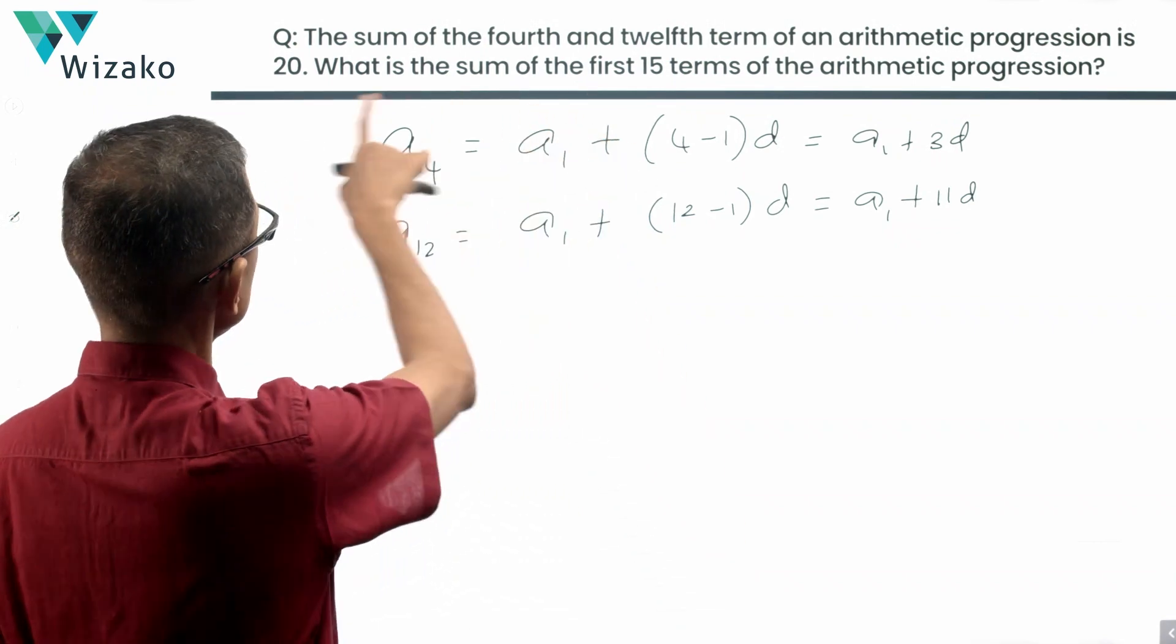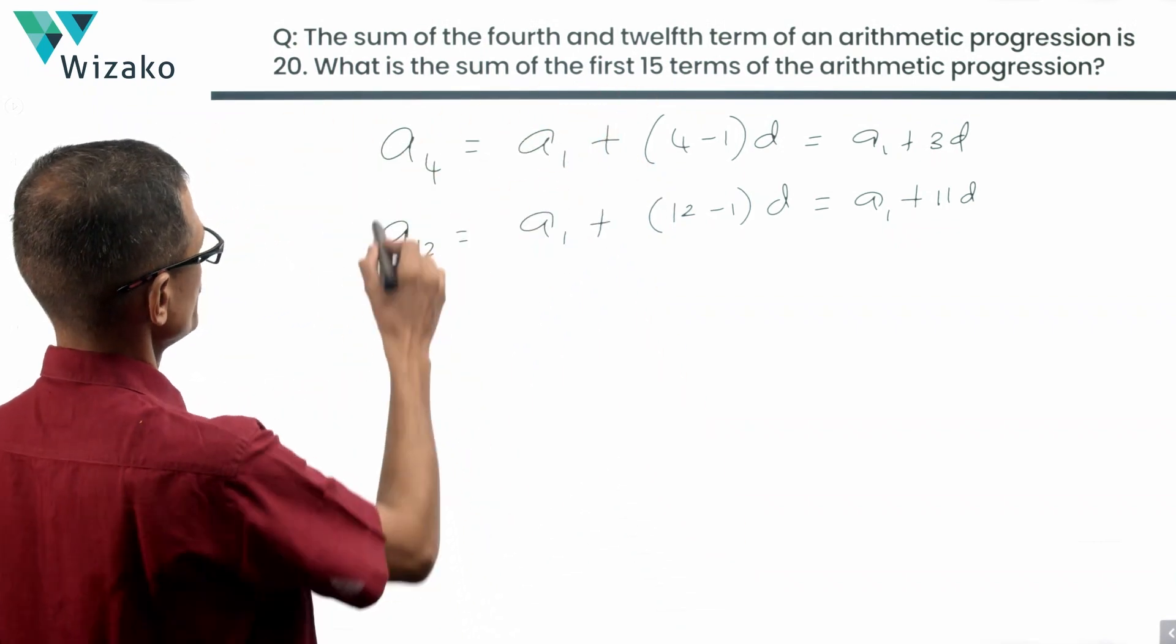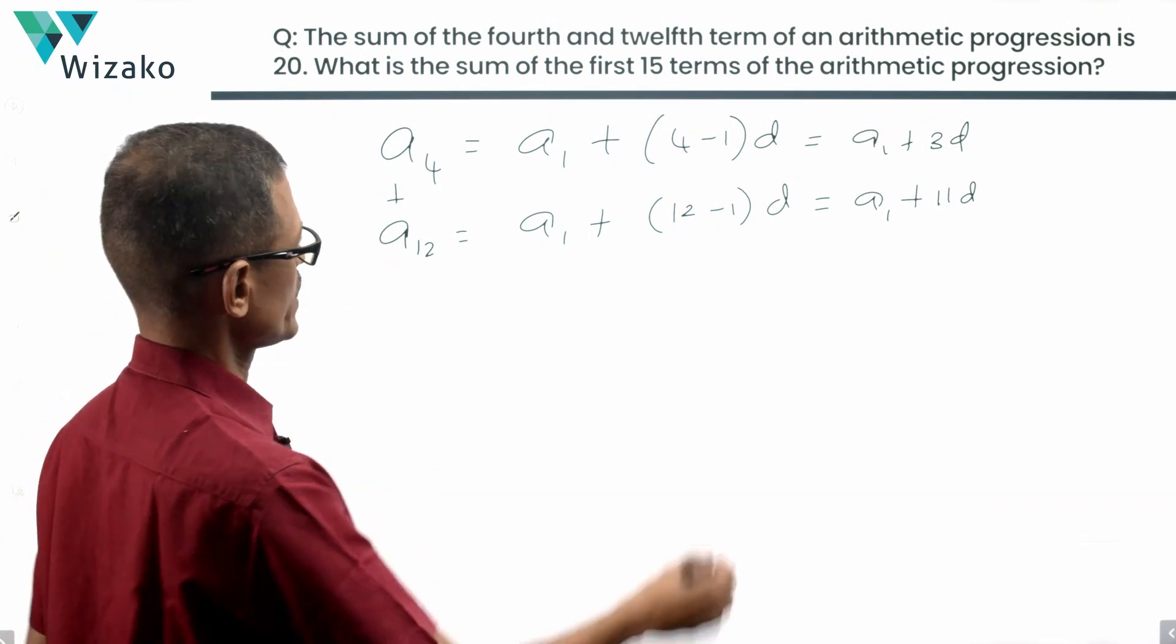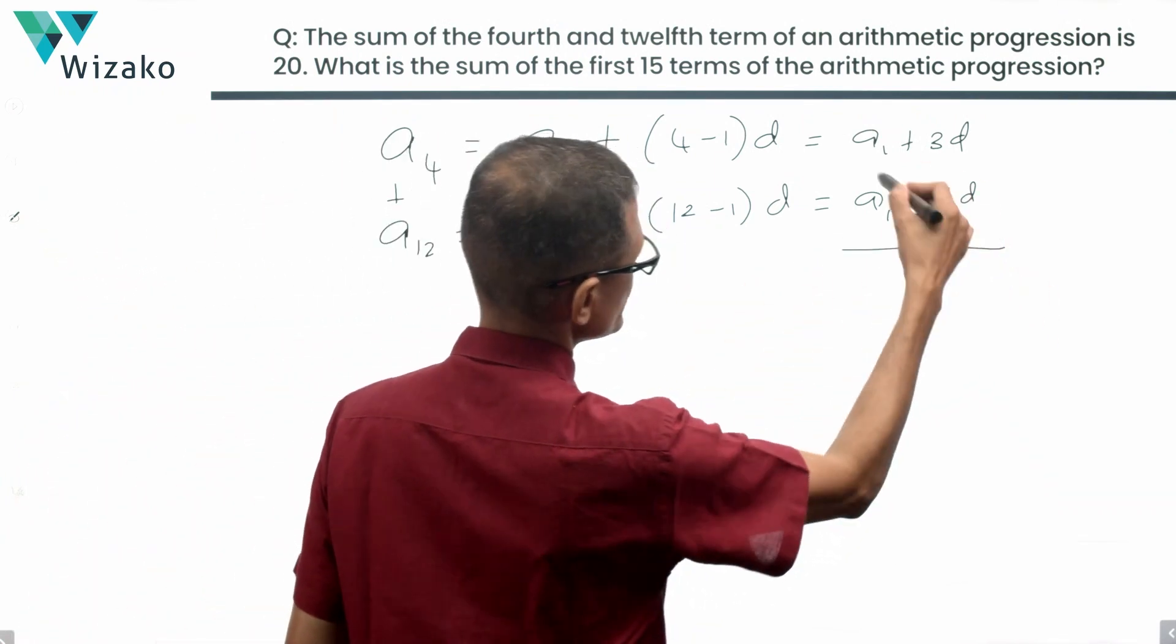They are saying the sum of the fourth and the twelfth term, A4 plus A12. This sum is equal to 20 is what they are saying. So let's add it. We are adding these two to find the sum.